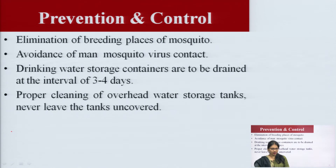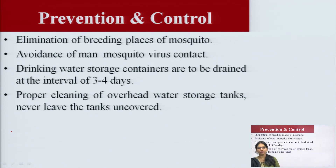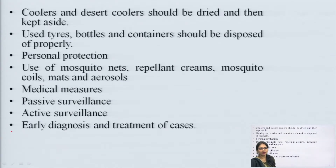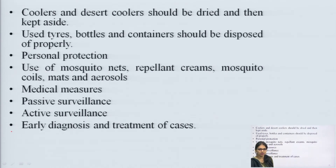Signs and symptoms of Dengue include seizures, confusion, tiredness, coma, and low platelet count. Prevention and control measures include: eliminating mosquito breeding places, avoiding man-mosquito contact, draining drinking water storage containers every 3 to 4 days, proper cleaning of overhead water storage tanks, never leaving tanks uncovered, keeping coolers dry, disposing of bottles and containers properly, using mosquito nets, repellent creams, mosquito coils, mats, aerosols, and implementing passive and active surveillance.